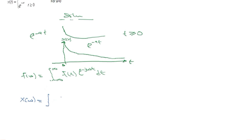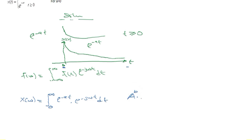The integral from zero to infinity of our x(t), which is exponential minus at, multiplied by exponential minus j omega t, dt. Now if you remember your mathematics, if you have a raised to the power b multiplied by a raised to the power c, that is the same as a raised to the power b plus c. We are going to apply this law to these exponentials.